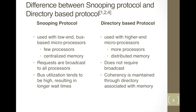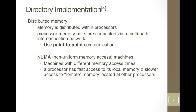In directory-based protocol, coherence is maintained through the directory. The directory implementation has directory memory and nodes with point-to-point communication. The access time for machines to local memory is fast and to remote memory is slow. Thus they have non-uniform memory access, which is called NUMA.